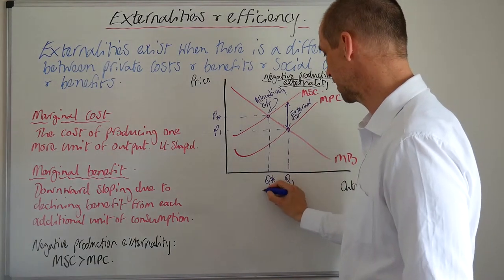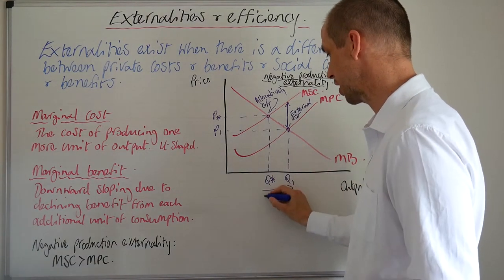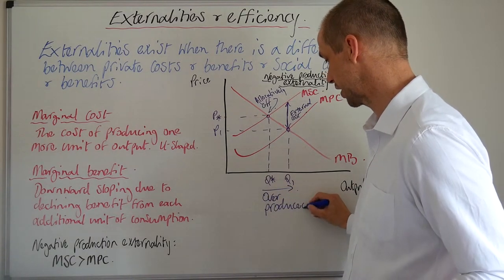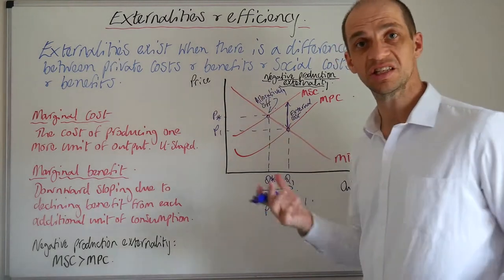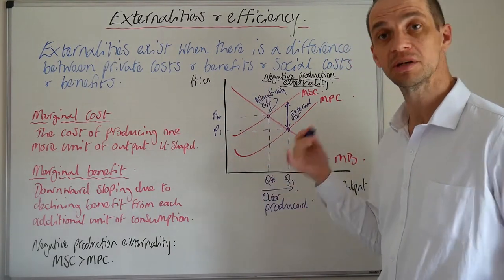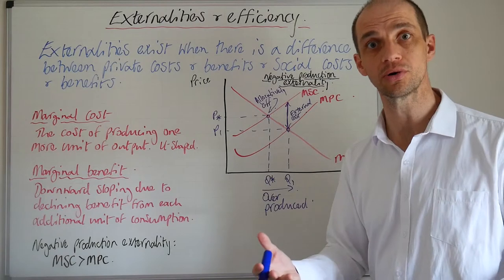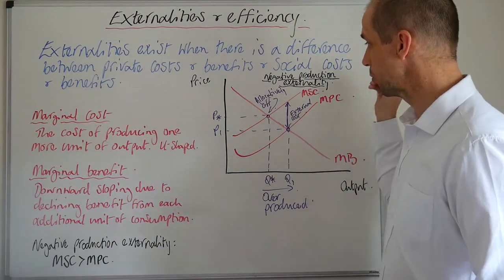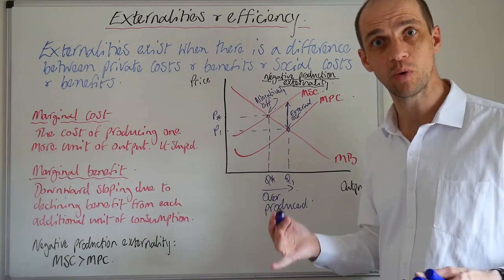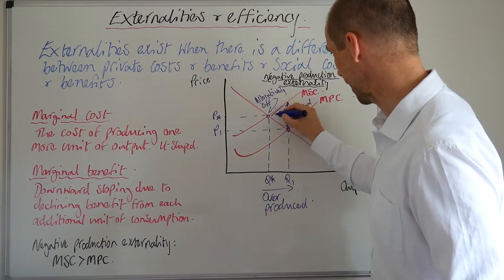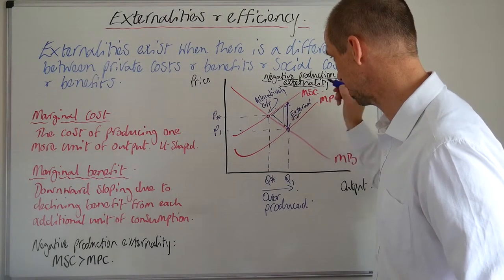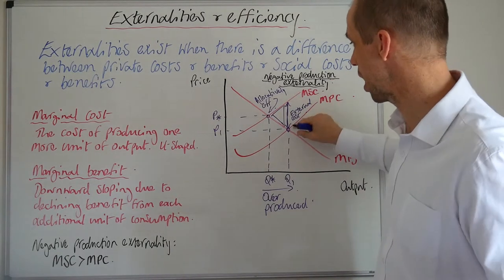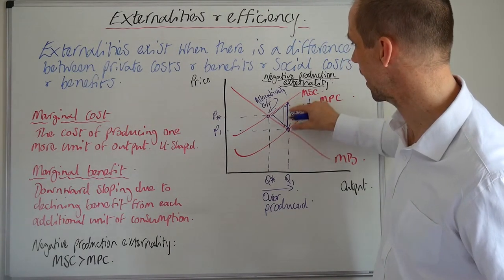So what we can see at the moment is that we have overproduction. This good is overproduced in terms of what society thinks about it. And moreover, it's actually underpriced because it doesn't reflect the true cost born upon society. As a direct consequence of that, we have an area of deadweight economic loss, which represents all of that area.